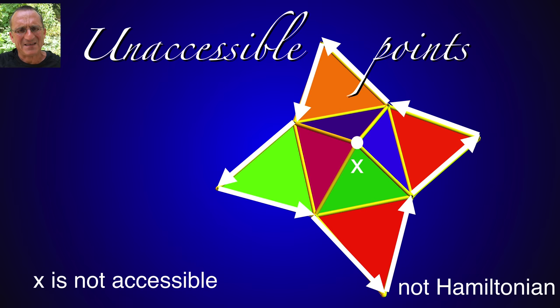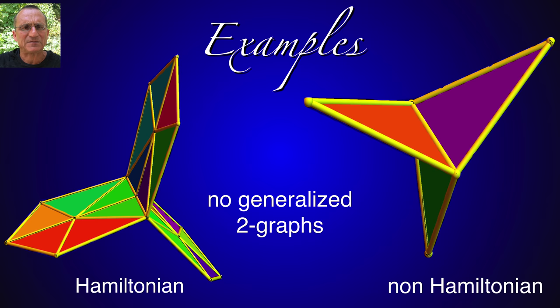The Hamiltonian cycle has to go along the boundary. It's forced to go along the boundary. It cannot reach the interior. It's not a Hamiltonian graph.